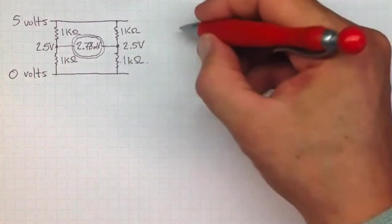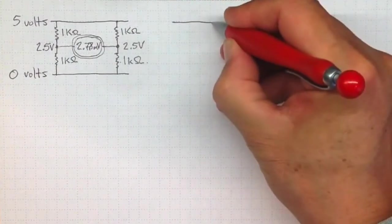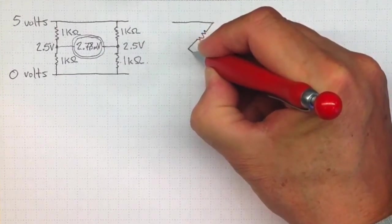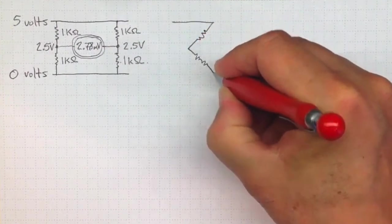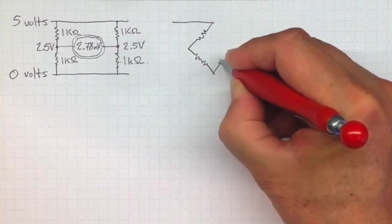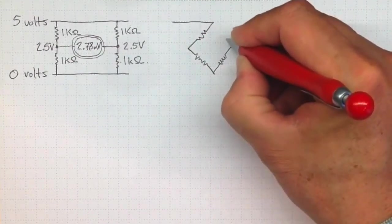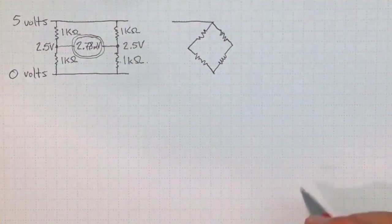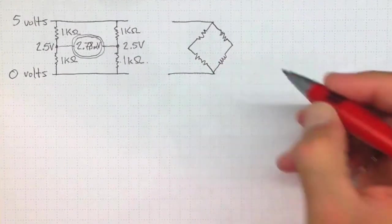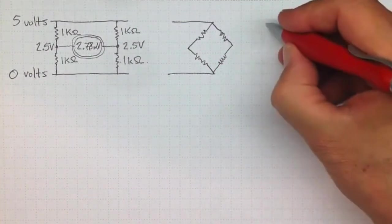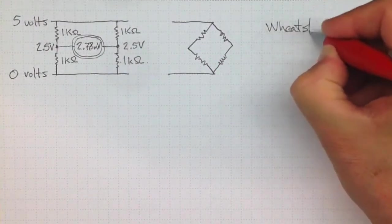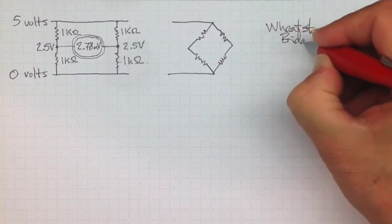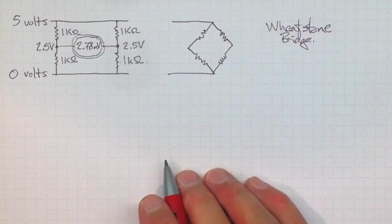Now usually you'll see this picture drawn something like this, with the resistances in this diamond shaped pattern. Just about any time you see that diamond shaped pattern, you're looking at a system called a Wheatstone Bridge.